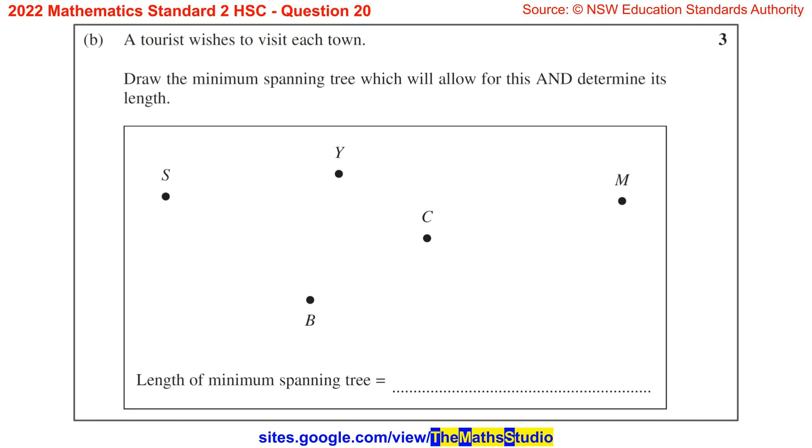Part B. A tourist wishes to visit each town. Draw the minimum spanning tree which will allow for this and determine its length.